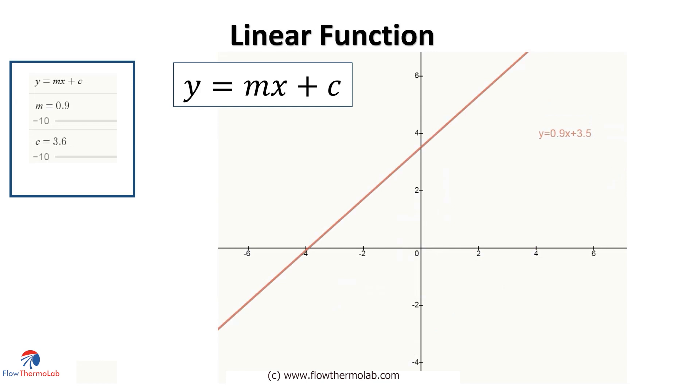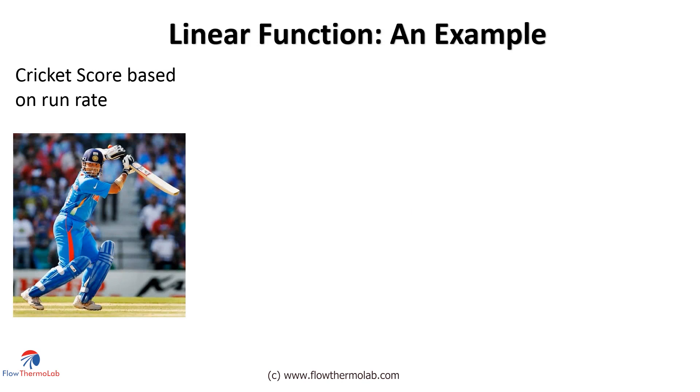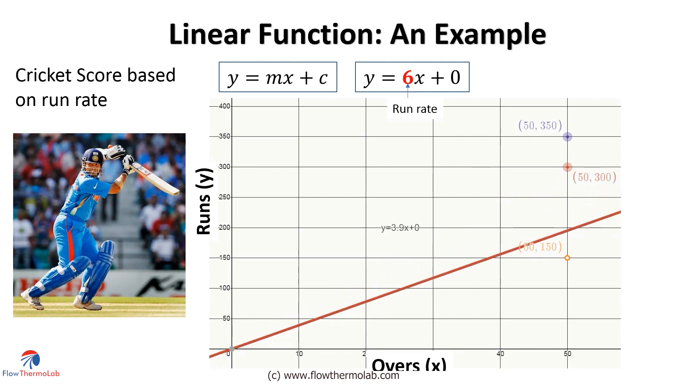An example is the cricket score, which we calculate in our mind when we watch a cricket match. In the linear function y equal to mx plus c, the slope value m here is the run rate. That is how many runs we take per over. And we know that if the run rate is 6, then after the end of 50th over we will get 300 runs. If we vary this slope that is the run rate, we will end up with different outputs or scores. If the run rate is 3 we will get only 150 runs. Similarly if we want 350 runs which is a good total, then our run rate should be 7 per over.